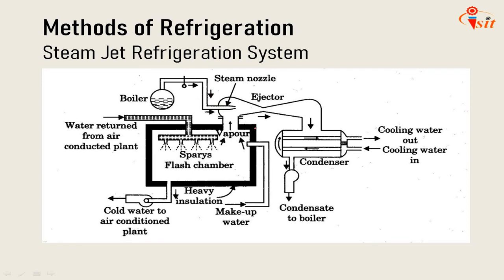Next is Steam Jet Refrigeration. This system uses the principle of boiling water below 100°C. If the pressure on the surface of water is reduced below atmospheric pressure, then water boils at 6°C if the pressure is 5 cm of water, and at 10°C if the pressure is 6.5 cm of water. The very low pressure or high vacuum on the surface of water can be maintained by throttling steam through jets or nozzles.